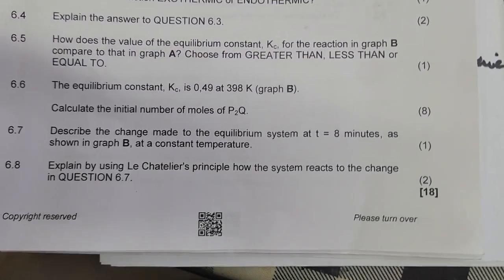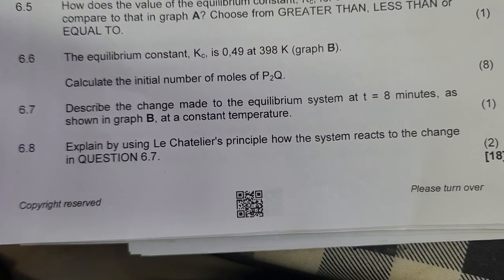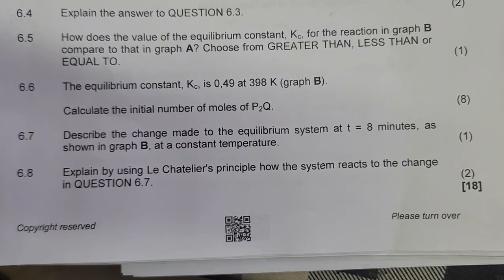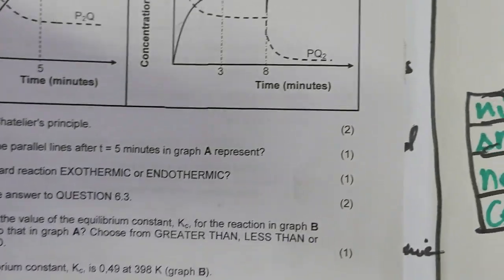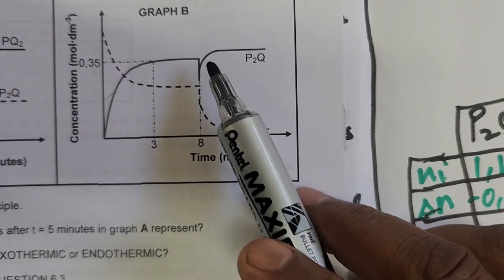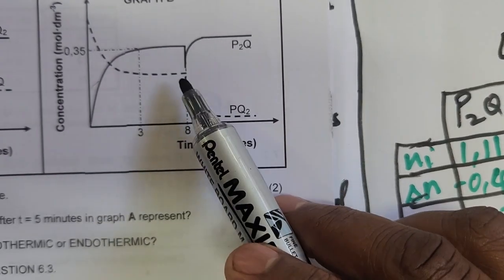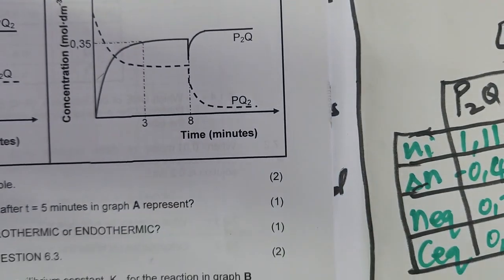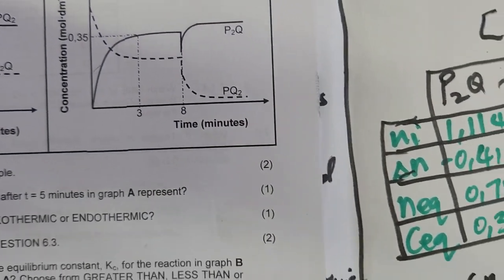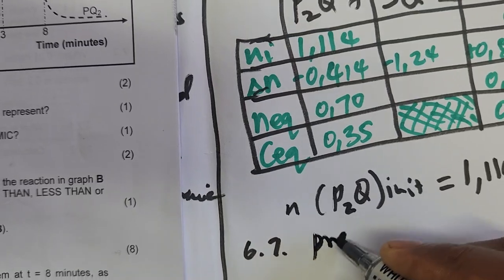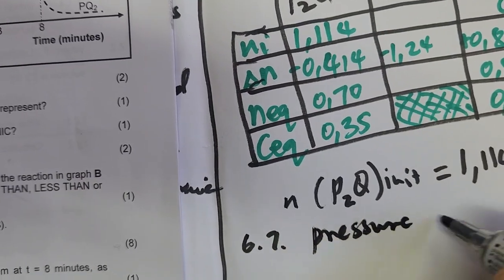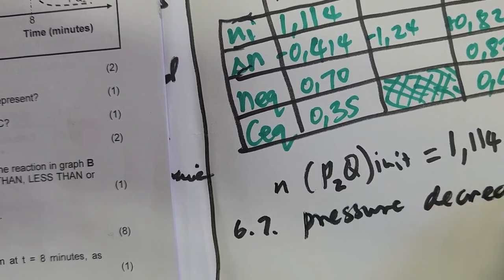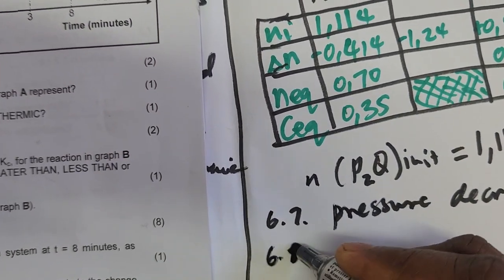6.7: Describe the change made to the equilibrium system at t = 8 minutes as shown in graph B, at constant temperature. Temperature does not change. The only factor that can decrease the concentration of both reactants and products is pressure — therefore pressure was decreased.